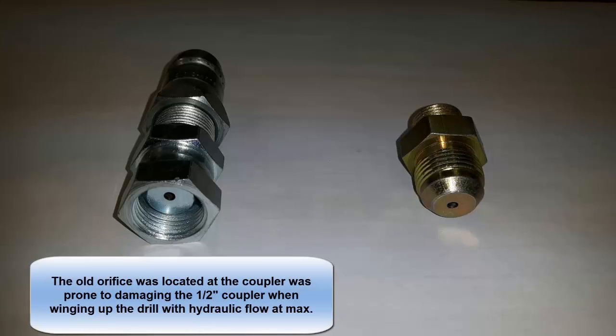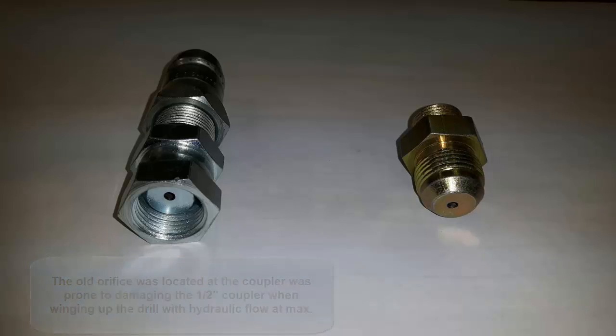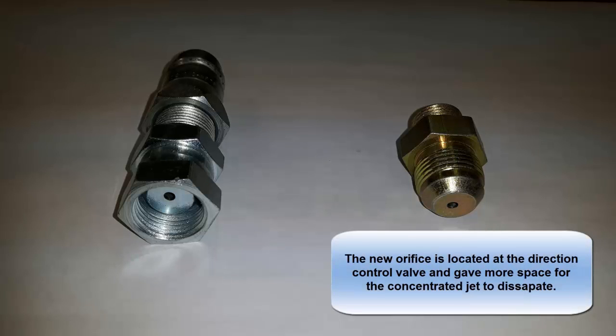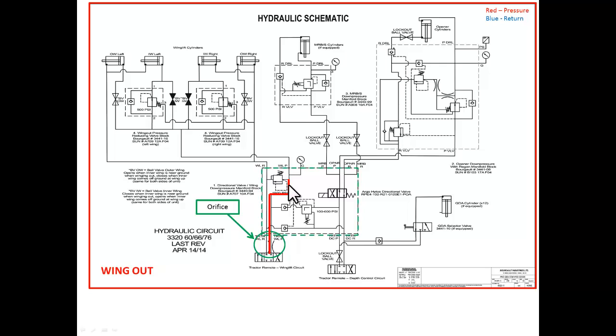The old orifice was located right by the half inch tip and is prone to wrecking the tip. The new orifice is located directly in the block. The orifice on the pressure side ensures that the wing lift is slow enough to prevent damage.